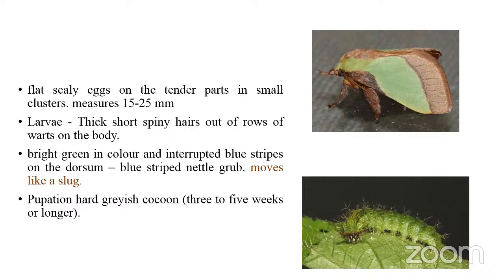The larva becomes fully grown in about six weeks. It has a greenish body with white color lines, scolae all over the body, and interrupted blue stripes on the dorsum. Because of these blue dorsal stripes, they are known as the blue-striped nettle grub. The name 'slug caterpillar' comes from their slow, sluggish movement like a slug. They pupate in a hard grayish cocoon, and the adult emerges in about three to five weeks.